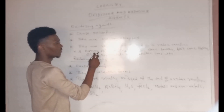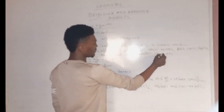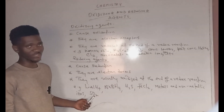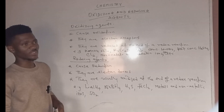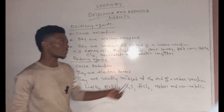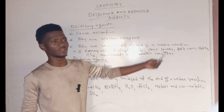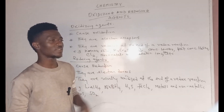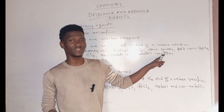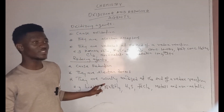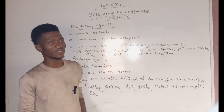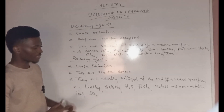Sulfur dioxide can also be an example — it can act as both an oxidizing agent and a reducing agent. Sulfur dioxide functions as an oxidizing agent in the presence of a stronger reducing agent, and functions as a reducing agent in the presence of a stronger oxidizing agent.